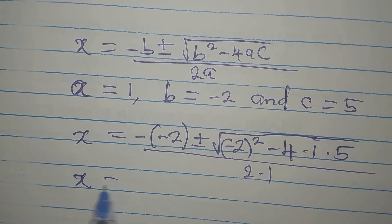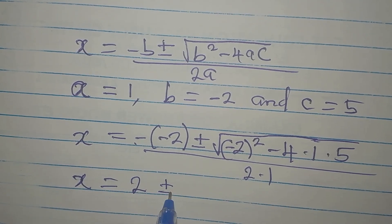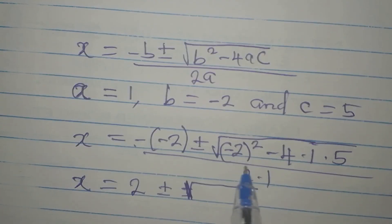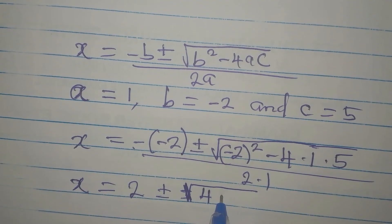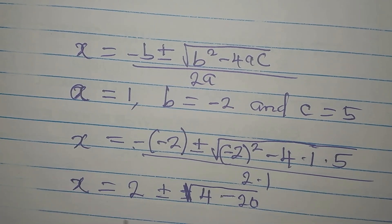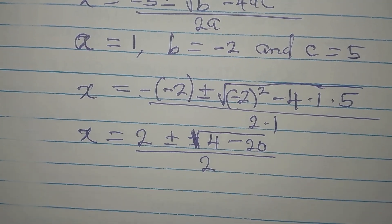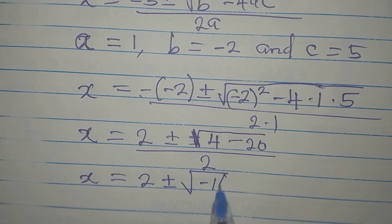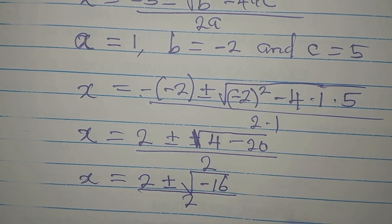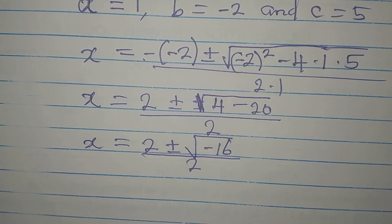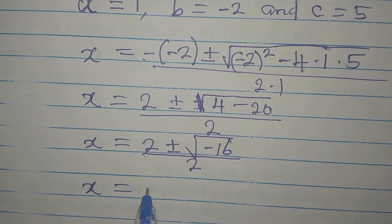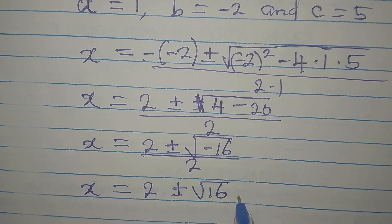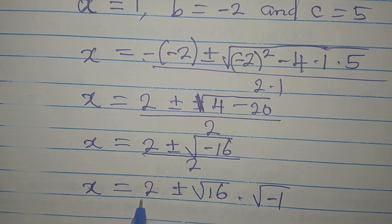Simplifying: X = (2 ± √(4 - 20)) / 2 = (2 ± √(-16)) / 2. We can write √(-16) as √(16 · (-1)) = 4i. Dividing through by 2 gives X = 1 ± 2i.